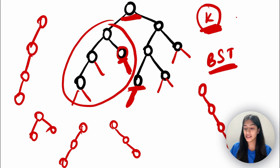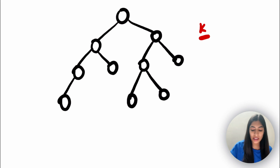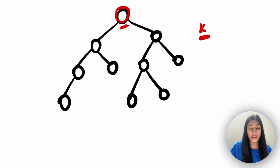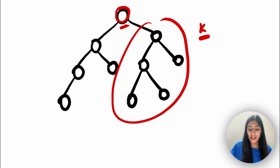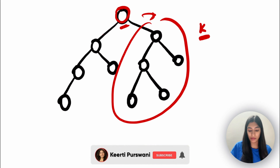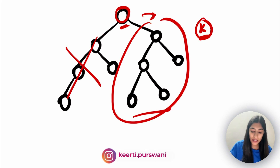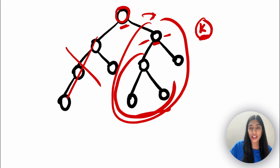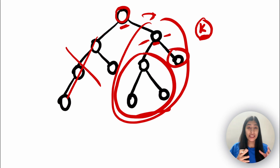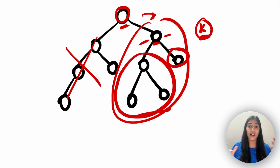We just have to insert a new leaf node considering the properties of BST. Starting from the root, if the key K value is more than the root value, the new node should exist in the right subtree, so we move towards the right and discard the left subtree. We come to the next node and check again: if K is less, we move to the left subtree. Basically, here we are doing something like binary search — we're chucking half the tree, moving towards either the left or right subtree.